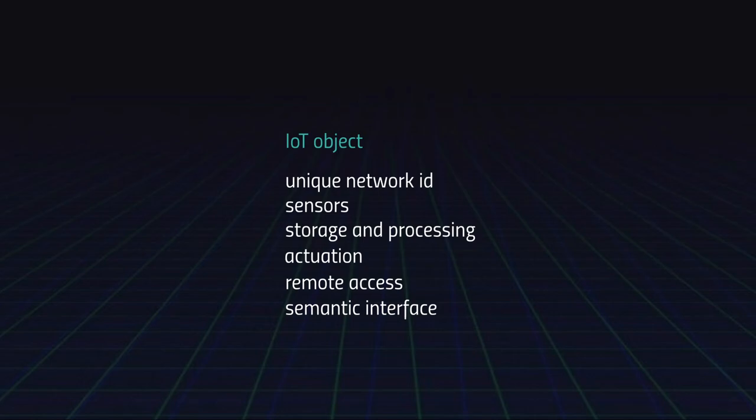This sensor can be anything from a motion sensor to voice, to video, to smell, to movement, and everything in between and beyond. The point is that it must have some sort of interface which allows it to extract data and information from its environment. It must also have storage and processing capabilities — they can be very advanced or very primitive — but the point is that it must be able to store this data, process it, and transmit it on the network.